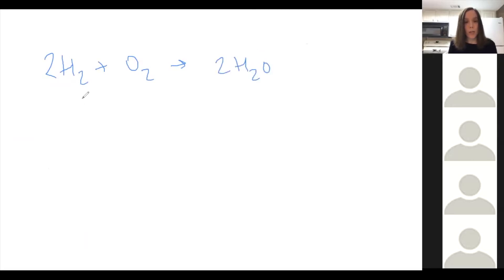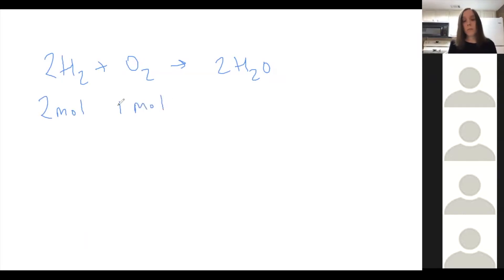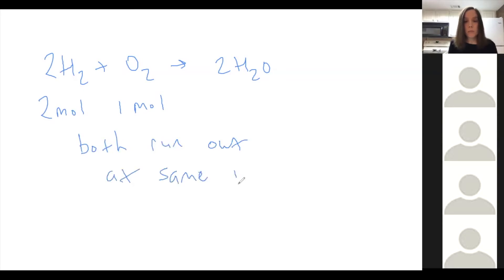Let's say instead we have two moles of H2 reacting with one mole of O2. Which one is limiting? They both run out at the same time, because the recipe calls for every one mole of O2 we need two moles of H2 — and that's exactly what we have. So they're both limiting.